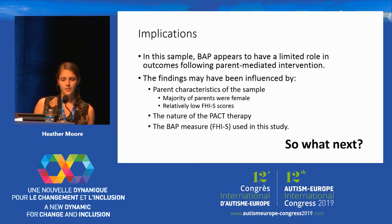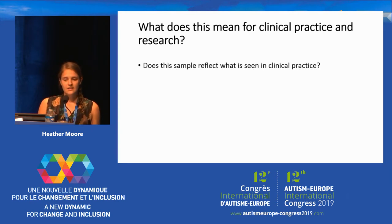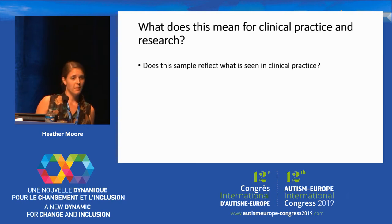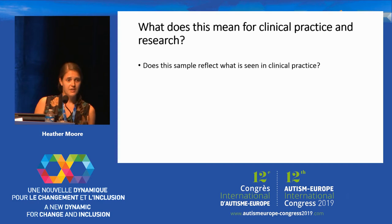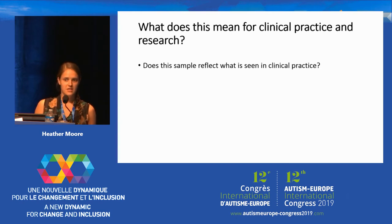What does this mean for clinical practice and for research? Does this sample reflect what is seen in clinical practice? For example, would that distribution of FHI for the broader autism phenotype be seen in a clinical population, or would you see higher rates of broader autism phenotype when you're not asking parents to volunteer for an intensive parent-mediated intervention?